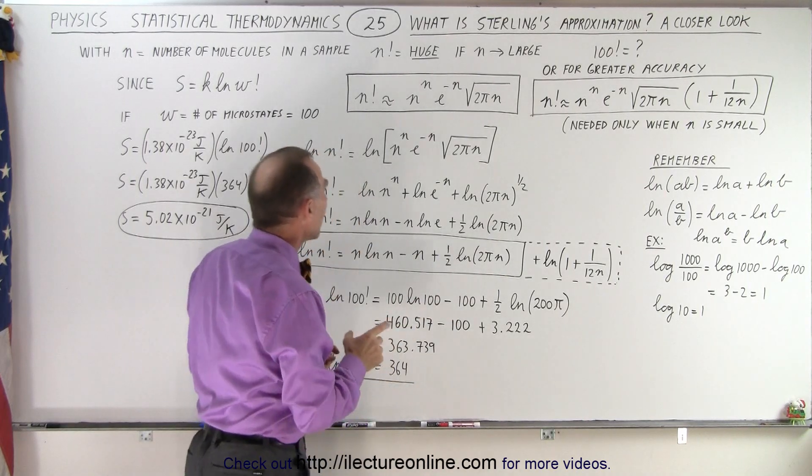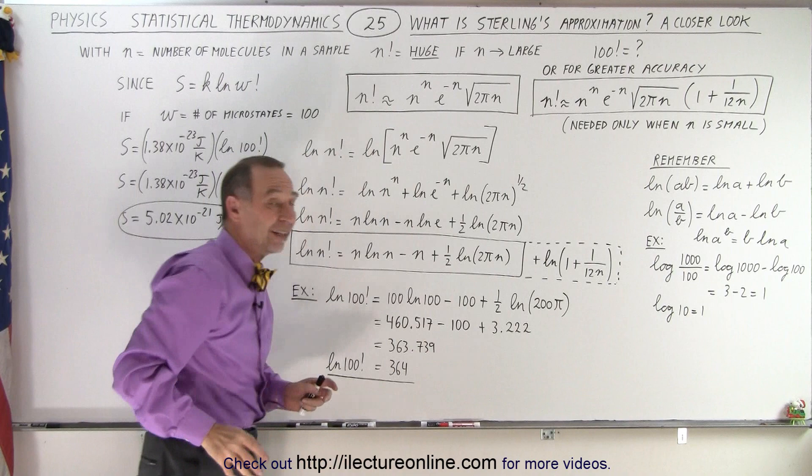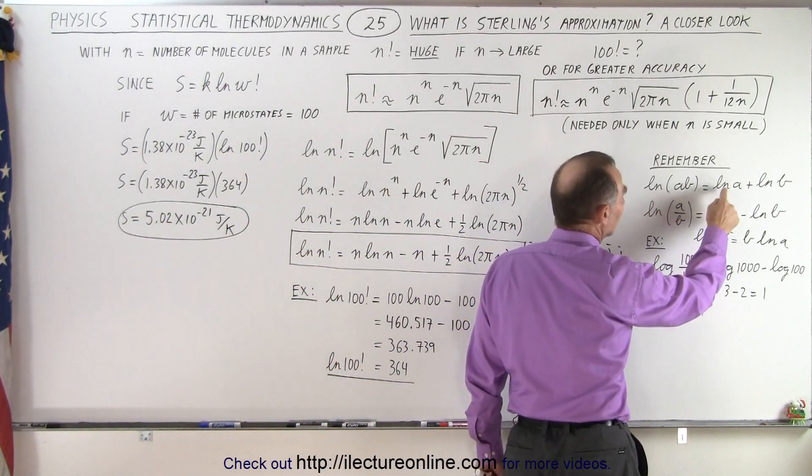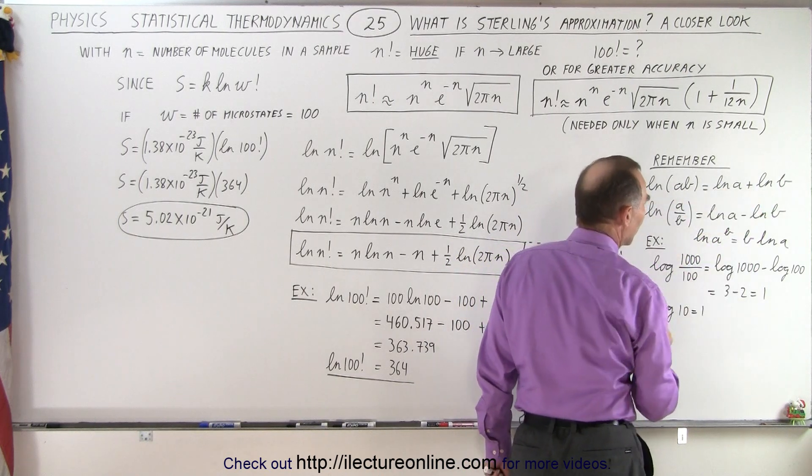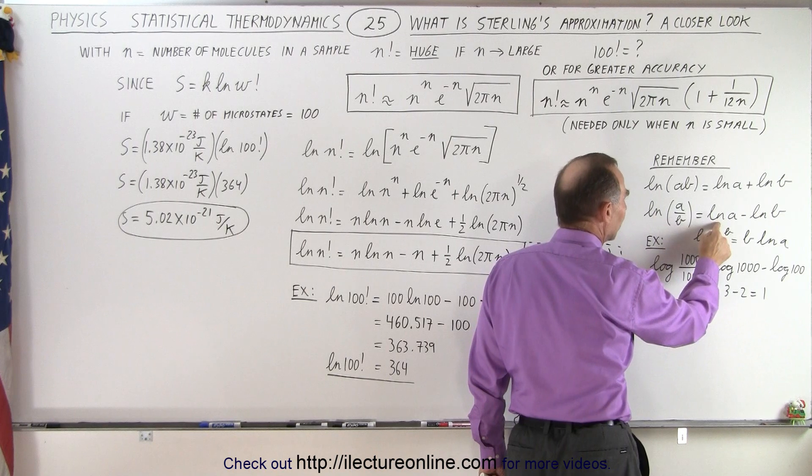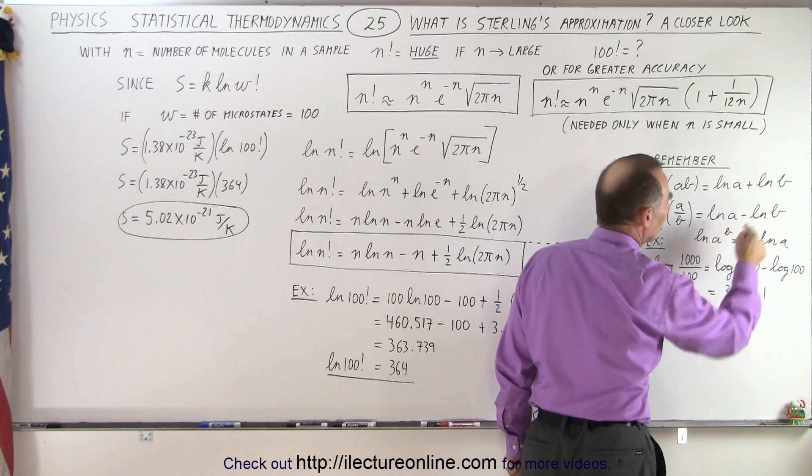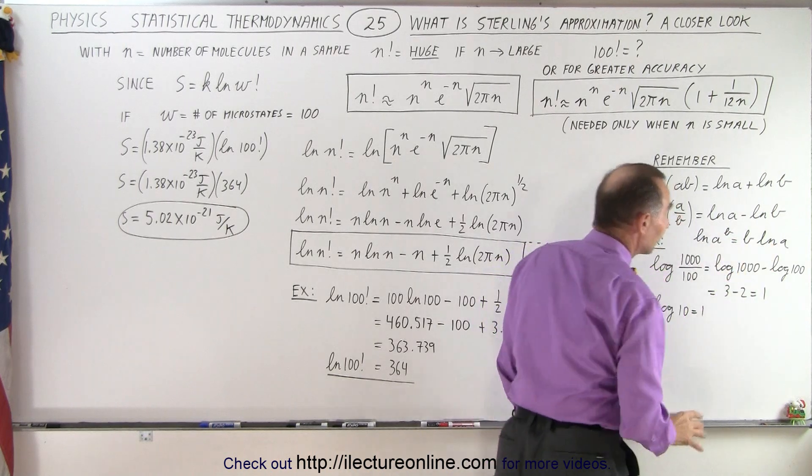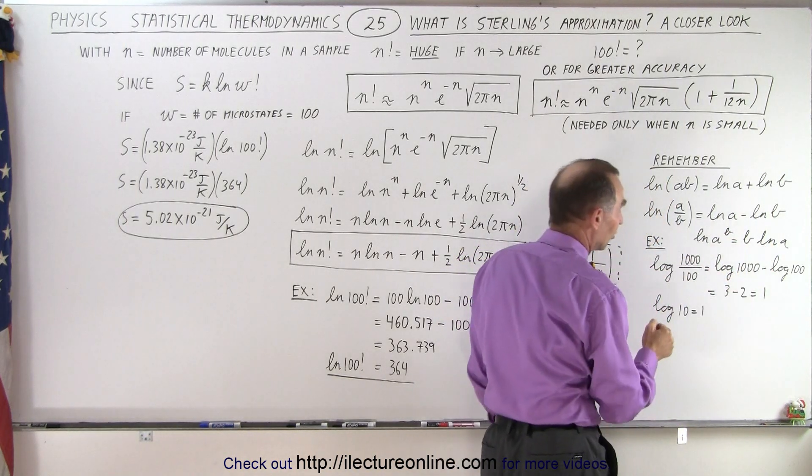So what you can do now is take the natural log of both sides. Why would you want to do that? Well, notice here, the natural log of a times b is equal to the natural log of a plus the natural log of b. The natural log of a divided by b is the natural log of a minus the natural log of b. And the natural log of a to the b power is equal to b times the natural log of a. And you can see that this works very nicely.